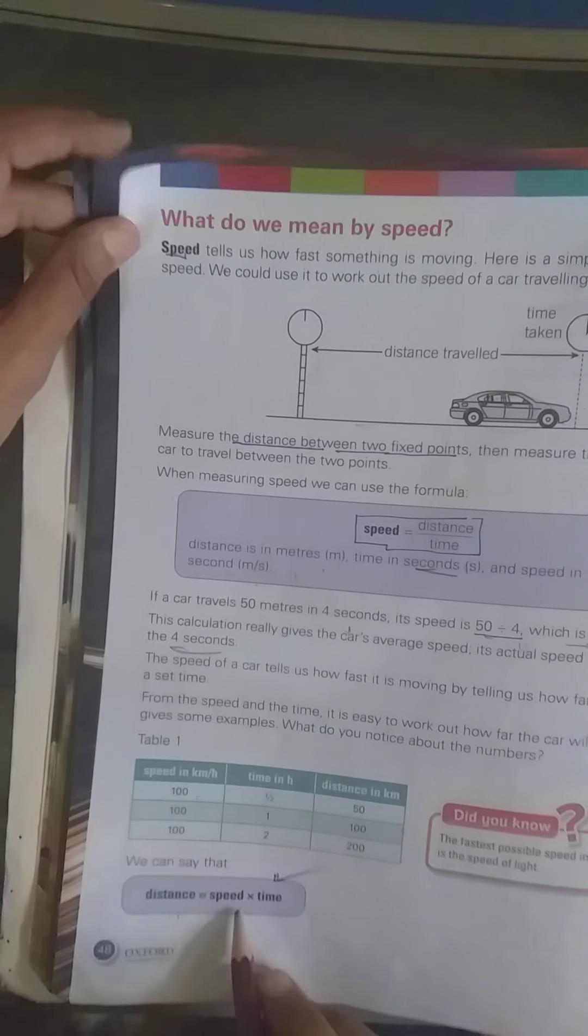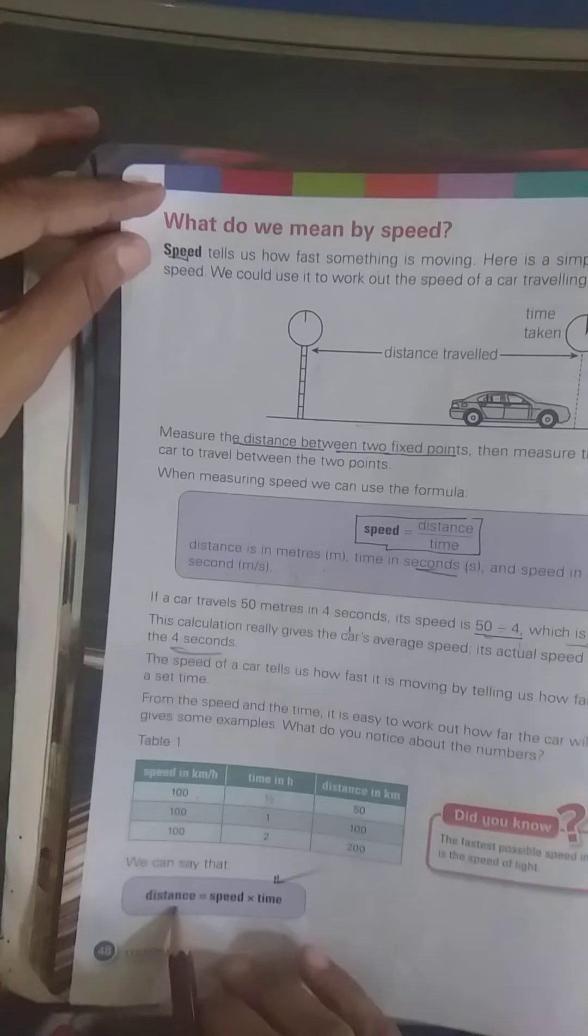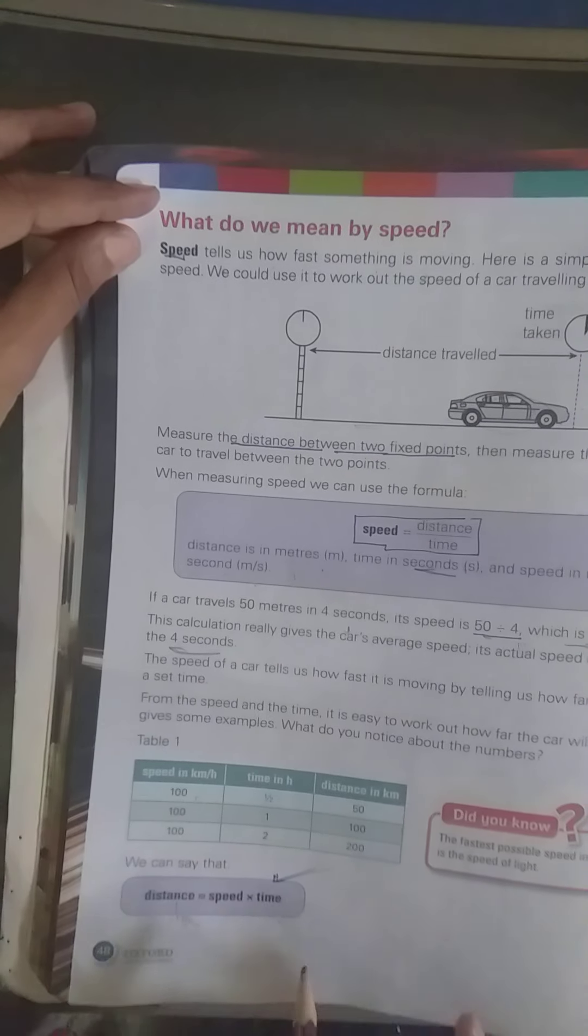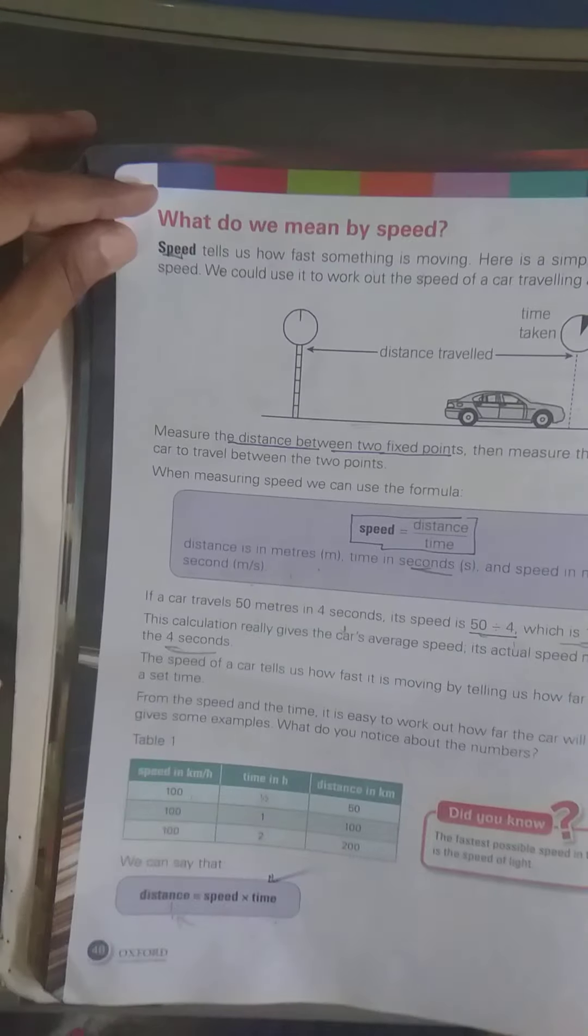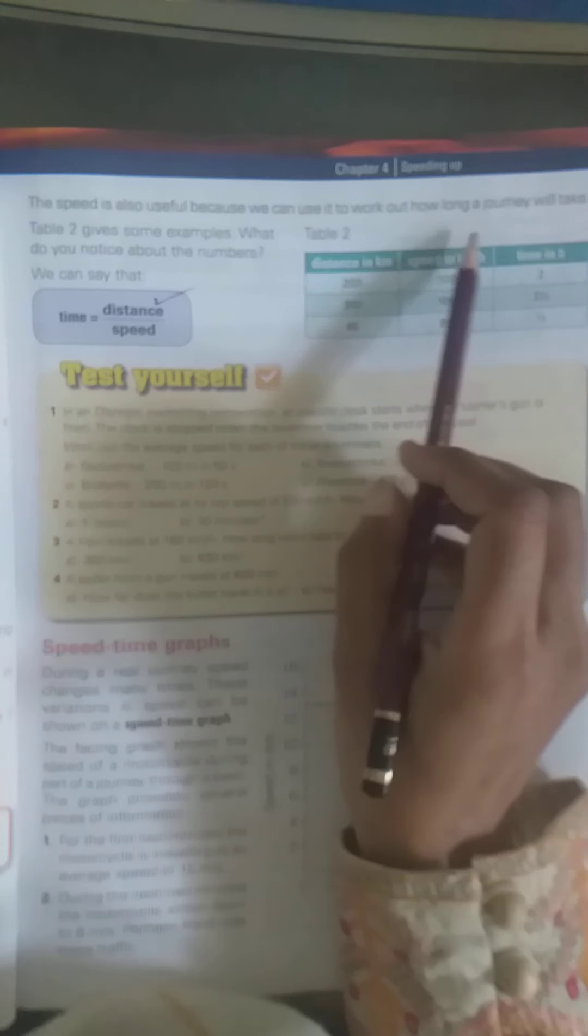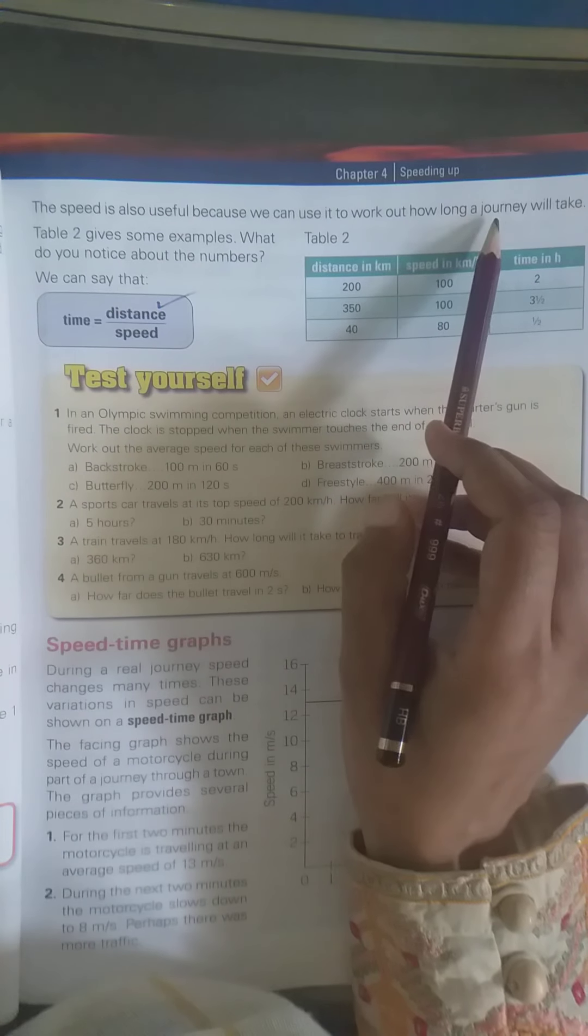Iska formula hai distance is equal to speed into time. Yarni ke distance ko hum measure karthi hai, speed kitnay hai car ki, or time isko kitna laghe ga. Dheekhe ki joh speed hoti hai yeh bhot useful hoti hai kyunke yeh joh hai wo joh long journey hoti hai wo mtlaab hume batatii hai.